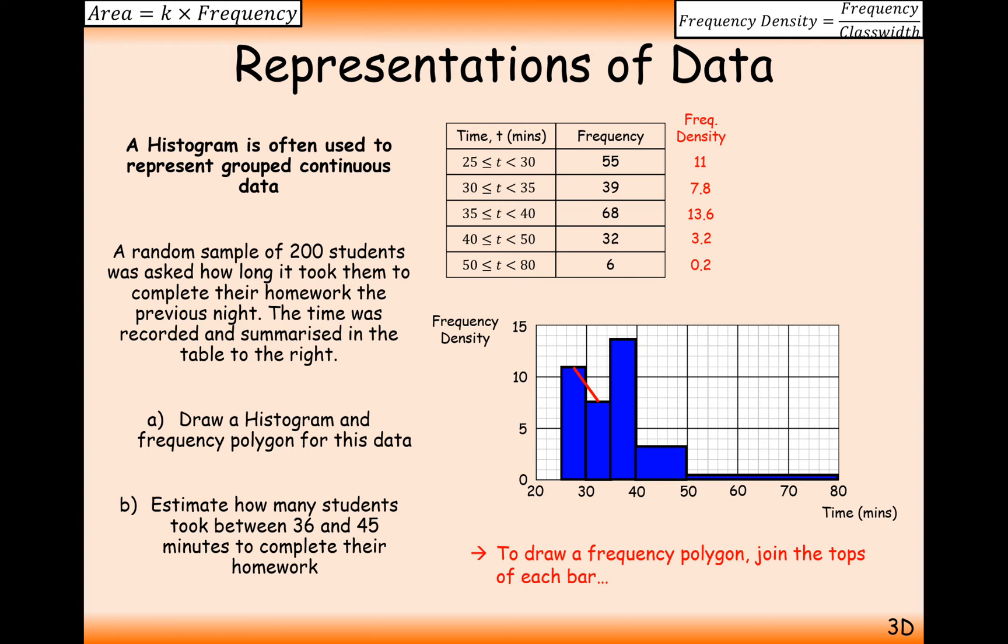Now, what that is is just a line that connects the middle of the tops of each of these bars to each other. So we have a marker here, a marker here, a marker down here on the middle of the top of that bar there. So that's what we're going to need there for a frequency polygon. Going back to this slightly more interesting question here.